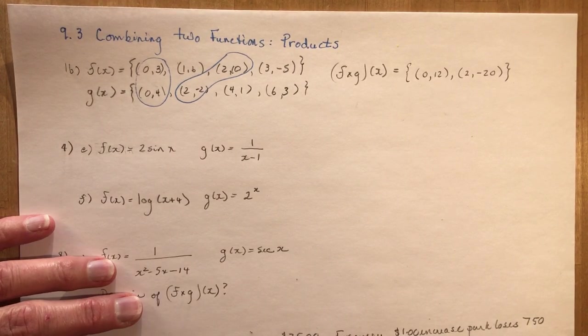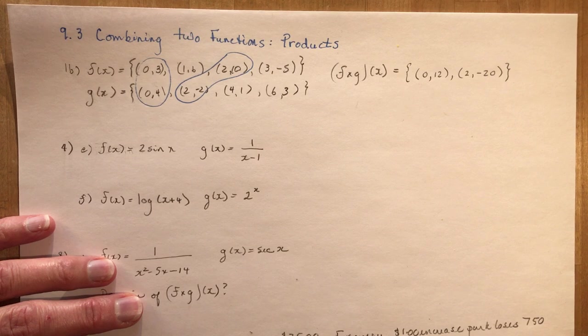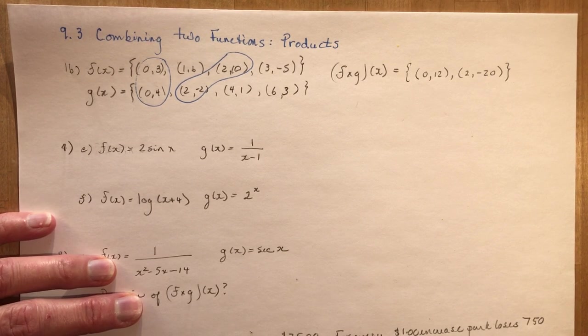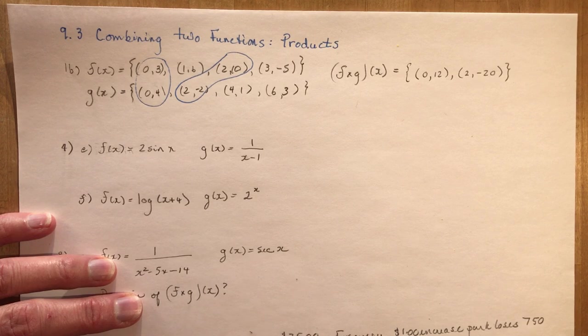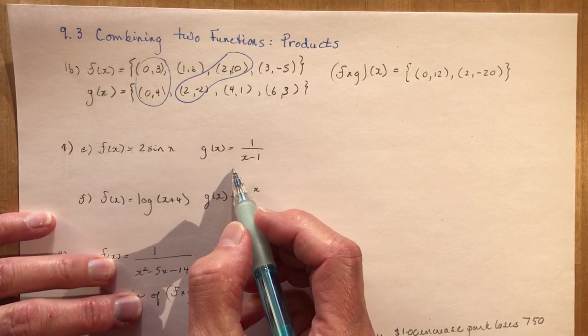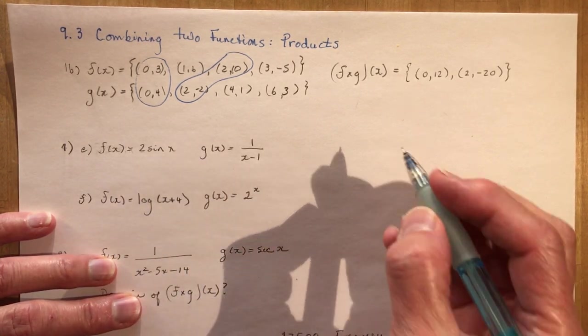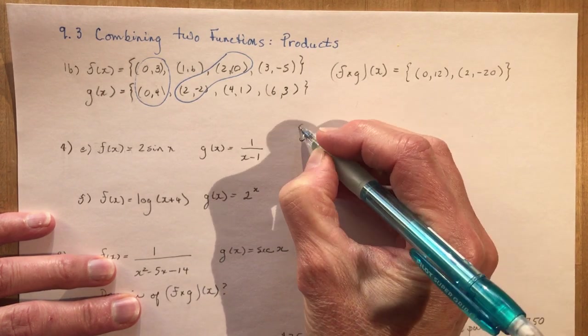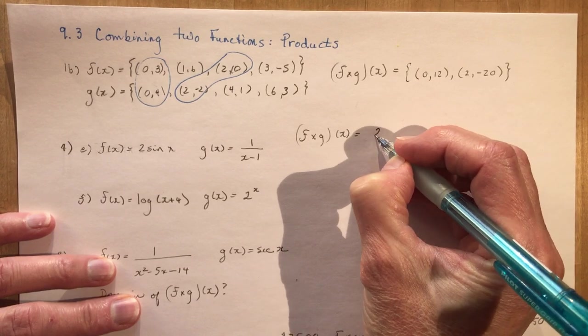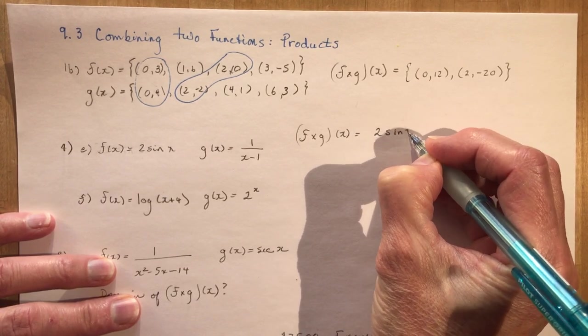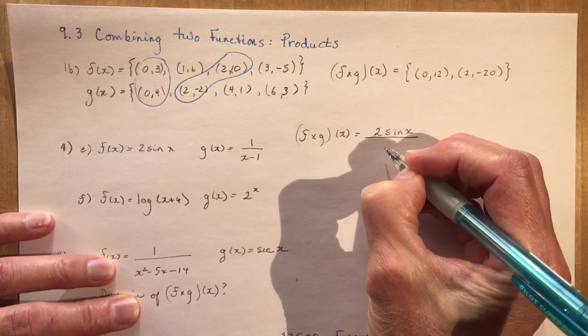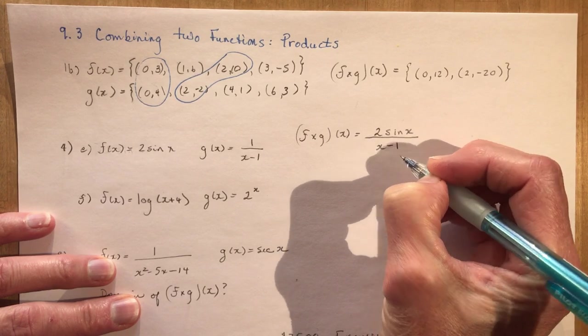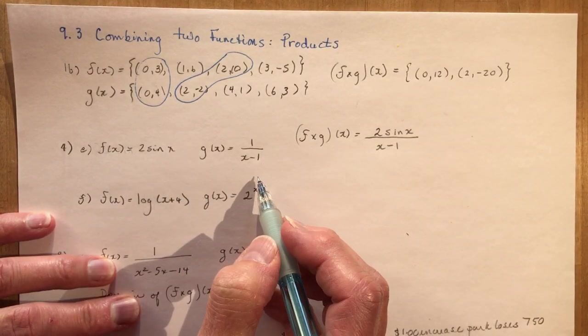Okay number four. Let me bring it up on the screen here. Number four was determine f times g at x for each of the following pairs of functions. So give you this function and this one. You're going to multiply them together. So that means that f times g at x is going to be 2 sine x. That'll be in the numerator. And in the denominator you're going to have x minus 1. I just multiply them together. That's all I did.